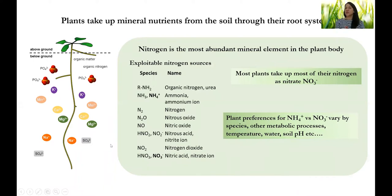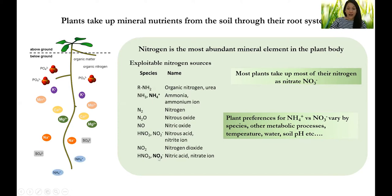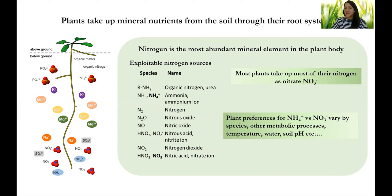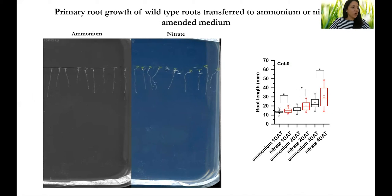Plants take up mineral nutrients from the soil through their root system. Among the most essential mineral elements, nitrogen is the most abundant in the plant body. Among the exploitable nitrogen sources, plants mainly take up nitrogen in the form of ammonia or nitrate. Most plants take up nitrogen as nitrate, and plant preferences for ammonium versus nitrate can vary by species or other factors. Arabidopsis has a preference for nitrate. In this project, we focus on the mechanisms that control root growth dynamics in response to ammonium versus nitrate.